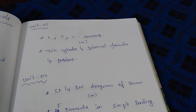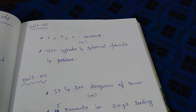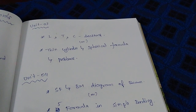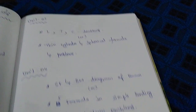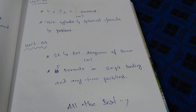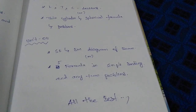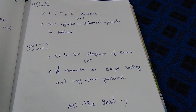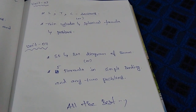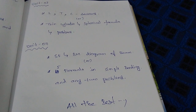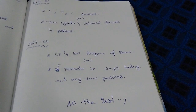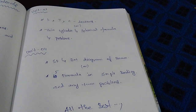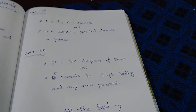Equilibrium of the object — that's the LTC sections. Then the tin cylinder is a spherical formula. Unit 4 is a simple force and bending moment diagram, and the simple bending element is WRA16.